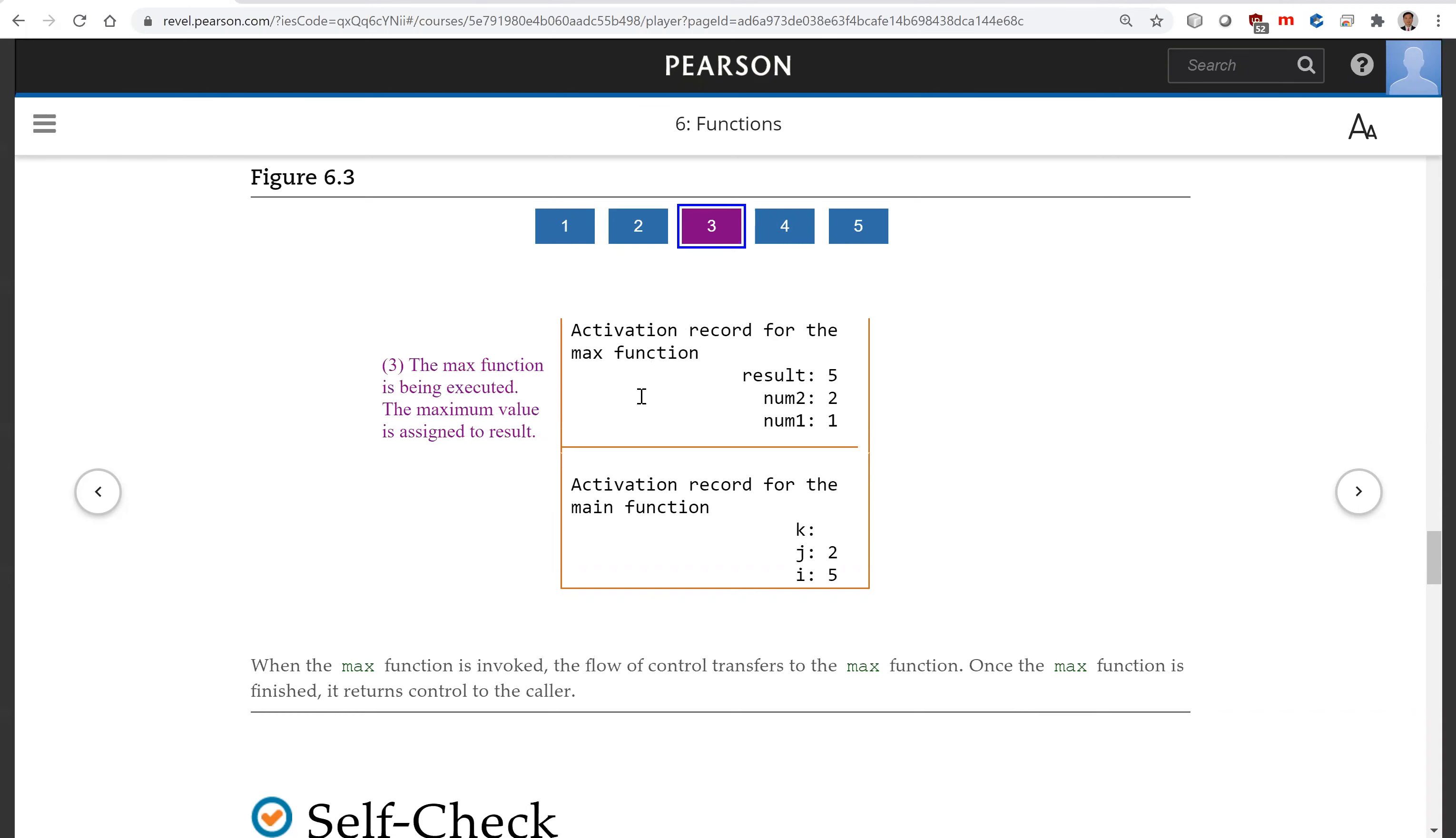And now we get the result. And after this, so we're going to return the result back to this caller. So the max function is finished. The activation record for the max function now is removed out of the stack. And finally, the main function is finished. So stack is now empty.